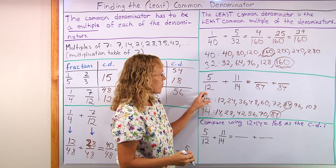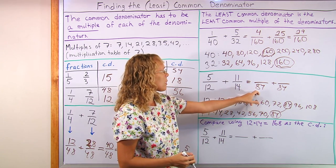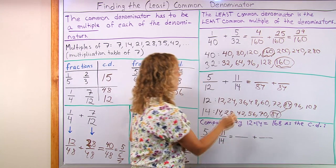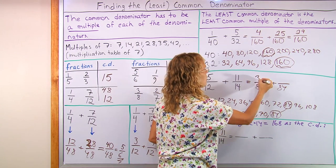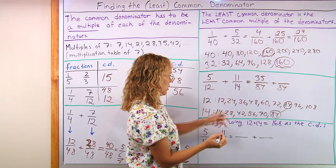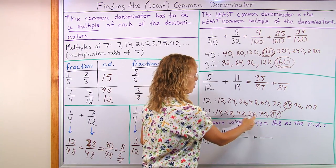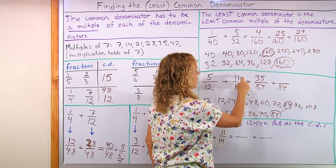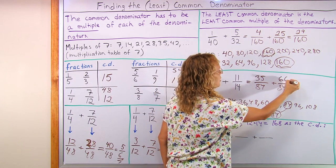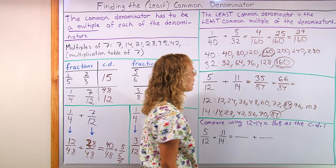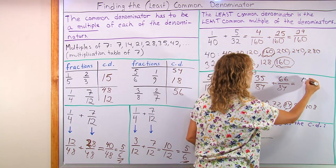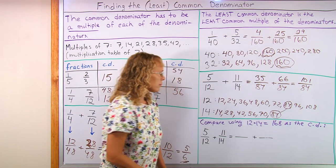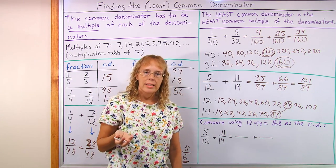Now, 12 goes to 84. I can count here. 1, 2, 3, 4, 5, 6, 7 times. So 7 times 5, 35. And 14, 1, 2, 3, 4, 5, 6. 6 times 14 is 84. So therefore, 6 times 11 also, 66. And now add, we get 101 over 84.